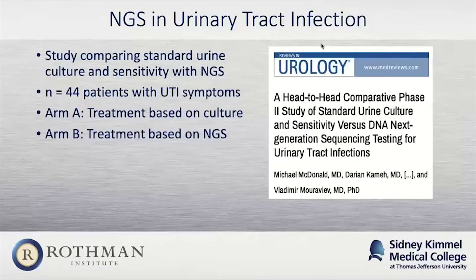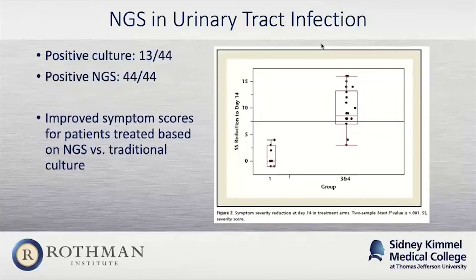This is one of the more recent head-to-head randomized studies looking at treatment based on culture versus treatment based on NGS. It's one of the things we're looking to replicate in orthopedics — a study comparing outcomes for treatment based on culture versus NGS. In urology, this study had 44 patients with UTI symptoms. Culture was positive in only 13 of those cases, whereas NGS was positive in all 44. Most importantly, outcomes were much better — symptom scores for patients treated based on NGS were much higher at two weeks compared to those treated based on culture.